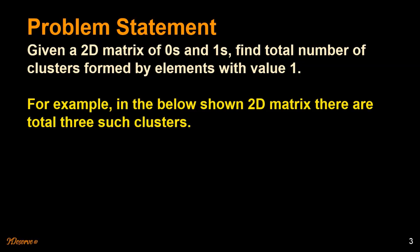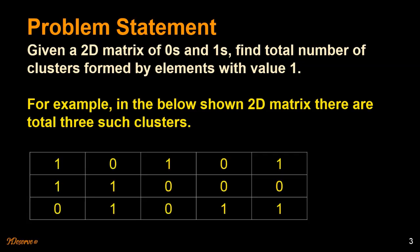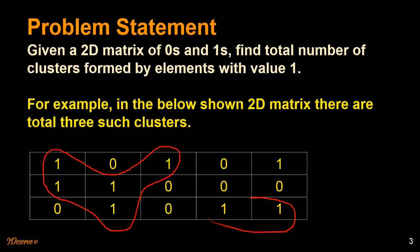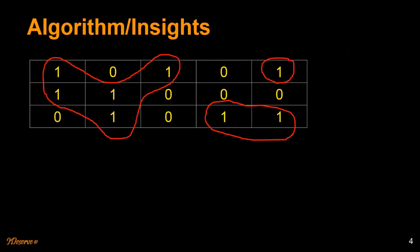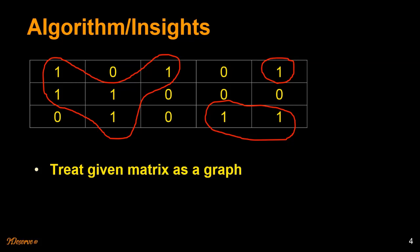For example, in the below 2D matrix there are total 3 such clusters. One of them is here, the second one is here at the bottom, and the third one is at the top. What we are going to do is treat the given matrix as a graph and then find out the number of connected components in that graph.